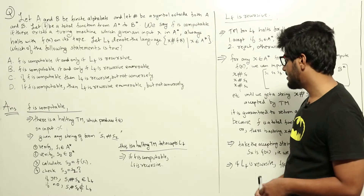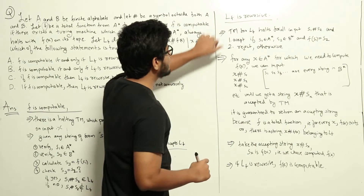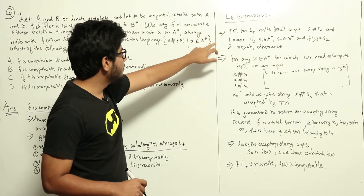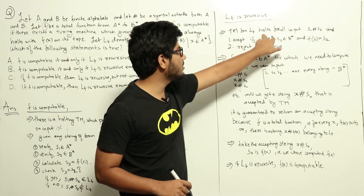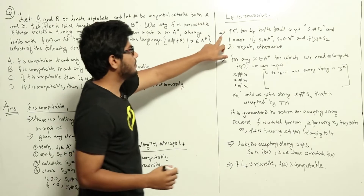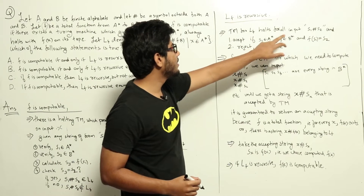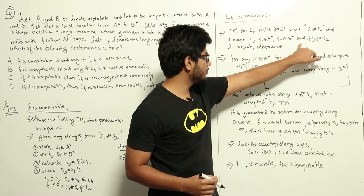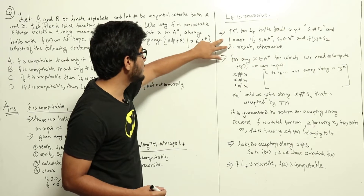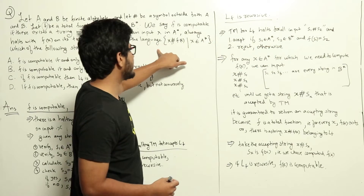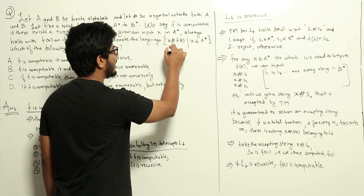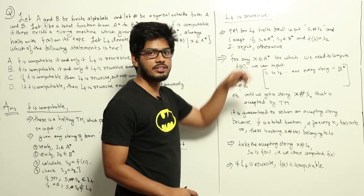Now for the other direction: suppose Lf is recursive. If Lf is recursive, the Turing machine for Lf halts for all inputs of the form s1 hash s2, and it accepts if s1 ∈ a-star, s2 ∈ b-star, and f(s1) = s2; it rejects otherwise. That is just the definition of this language.